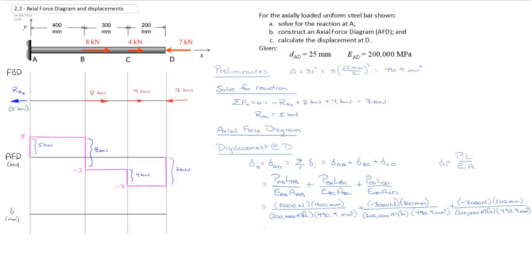I've already done the calculation, so I'll write down the three individual section results because that will help with graphing later. We have 0.0204 millimeters, minus 0.0092 millimeters, minus 0.01426 millimeters, for a total displacement between A and D of 0.00306 millimeters.